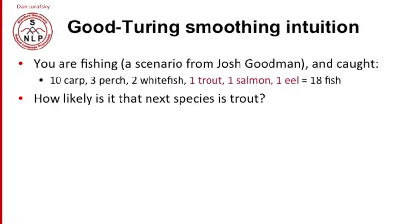Imagine you're fishing — a scenario invented by Josh Goodman. You've caught ten carp, three perch, two whitefish, one trout, one salmon, and one eel; eighteen fish total. We want to estimate how likely it is that the next species is trout. It's just like words: we have words that occurred ten times, or three, or two, or one, and we want to know how likely those rare ones are to occur again.